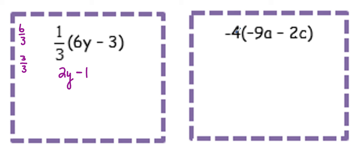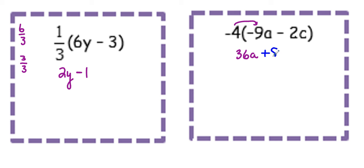Negative 4 times negative 9a — we have a negative times a negative, that's a positive. 4 times 9 is 36, and we have an a. We have a negative 4 times a negative 2 — a negative times a negative is a positive. 4 times 2 is 8, and we have a c.